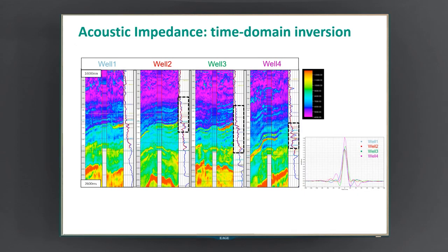This is what the inversion in the time domain looks like. On the box on the right-hand side, you can see the wavelets extracted at these four wells, and it's immediately visible that whilst for three of these four wells the size of the wavelets were actually fairly comparable, one of them has a different amplitude behavior — and this is down to the different illumination that takes place at this place in the subsurface. Because of this, we cannot easily identify a single deterministic operator that can link the reflectivity to seismic amplitudes, and therefore when we perform an acoustic inversion, we get good results for three out of four wells where the wavelet was consistent, whereas at well number four we are overestimating the contrast in acoustic impedance.